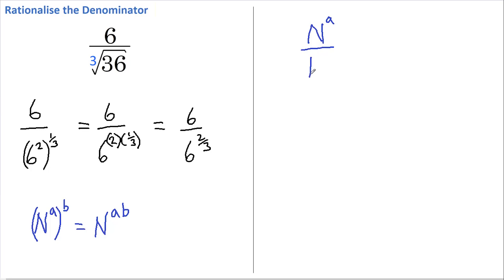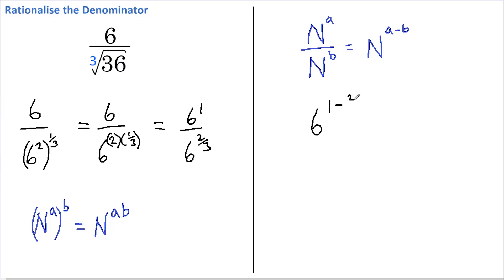Now there's another rule that says if we have a number raised to a power and that's divided by that same number raised to a different power, then we can write that as that same number raised to the difference between those powers. If we call this 6 to the power of 1, that means we can rewrite this as 6 to the power of 1 less two thirds, which is of course 6 to the one third.